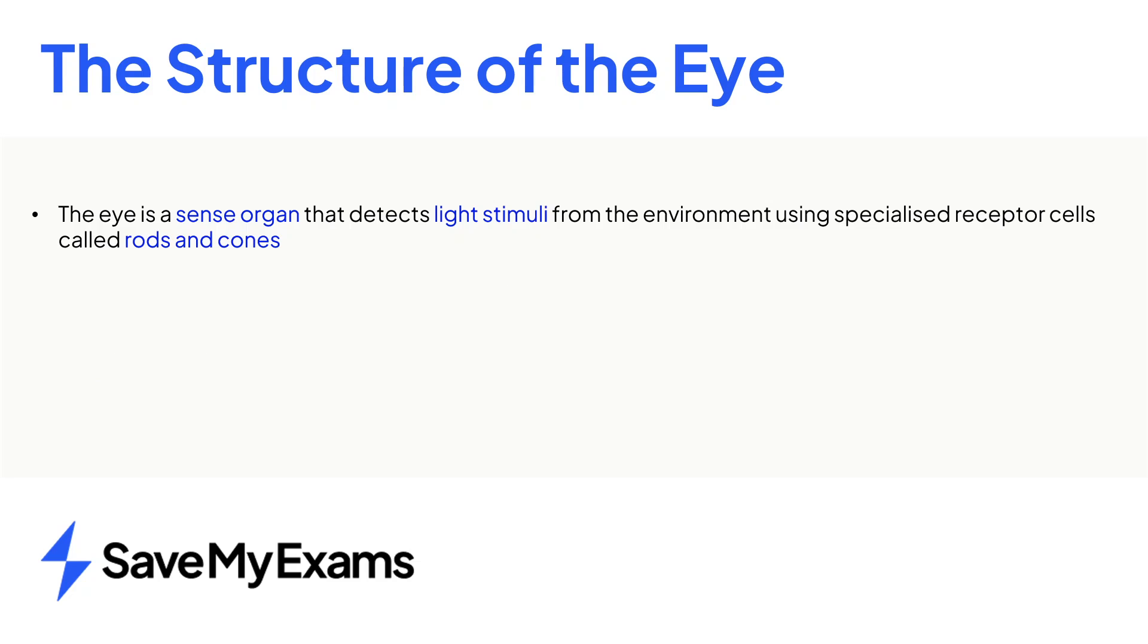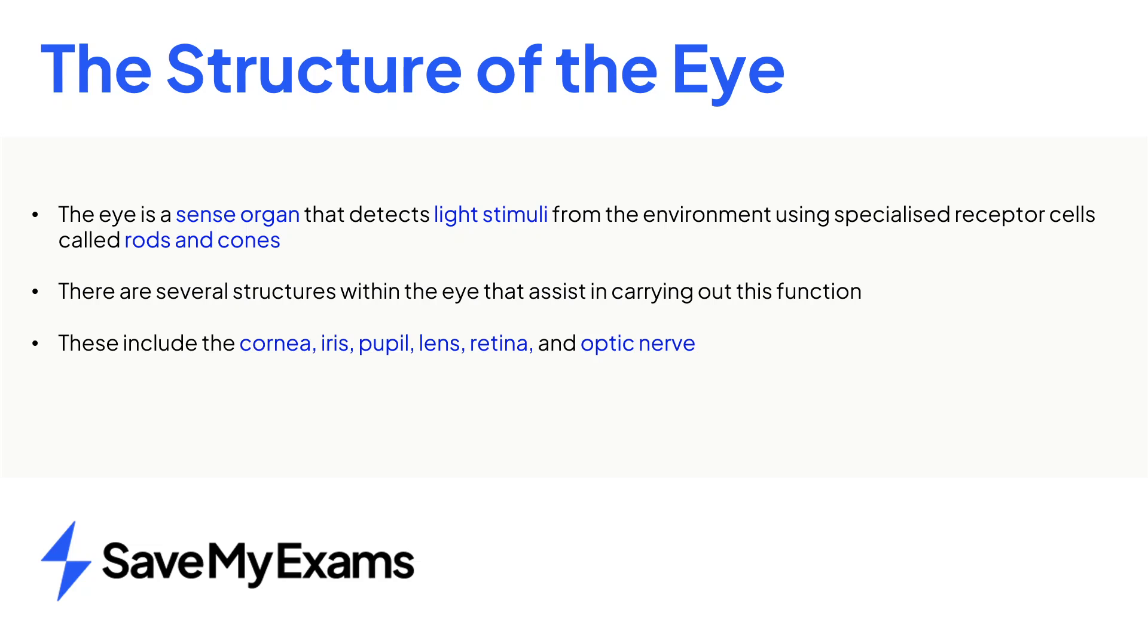In summary, the eye is a sense organ dedicated to detecting light stimuli from the environment. There are many structures in the eye that assist with its function, such as the cornea, iris, pupil, lens, retina, and optic nerve. The blind spot where the optic nerve leaves the back of the eye is where there are no rod and cone cells, and so no light is detected.